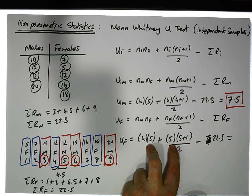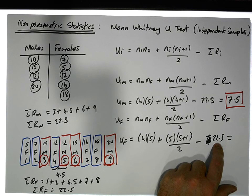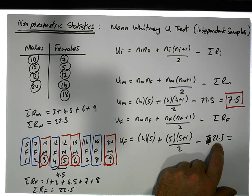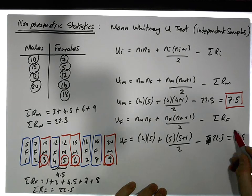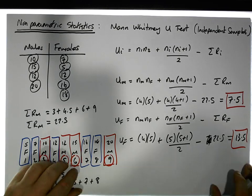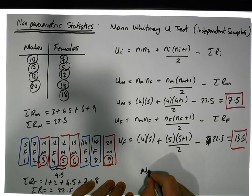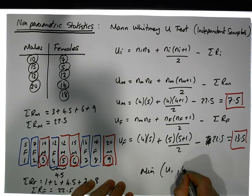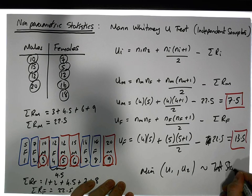35 minus 22.5 is going to give us a value of 12.5. So that's the second U value. We've really got everything done, now it's time to choose the smallest because the technique says choose the minimum of U1 and U2 as the test statistic.